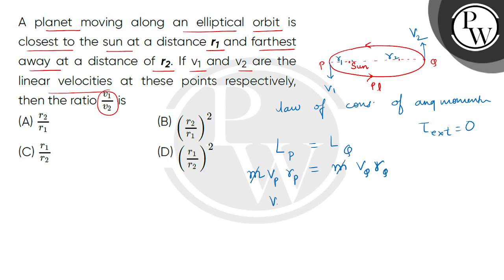Now, velocity at P is v1 and the distance at P is r1. So this is equal to v2 r2. v1 divided by v2 equals r2 divided by r1.